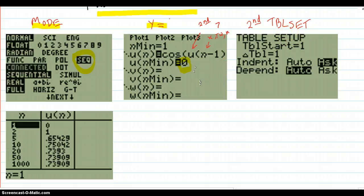Then you go to table setup. I set it to 1, but that doesn't really matter. What does matter is to set it to Ask and Auto for dependent. Then you type in things like 1, and you see that x_1 is 0, x_2 is 1. For x_5, x_10, you just put in any numbers you want because it's going to ask for them.